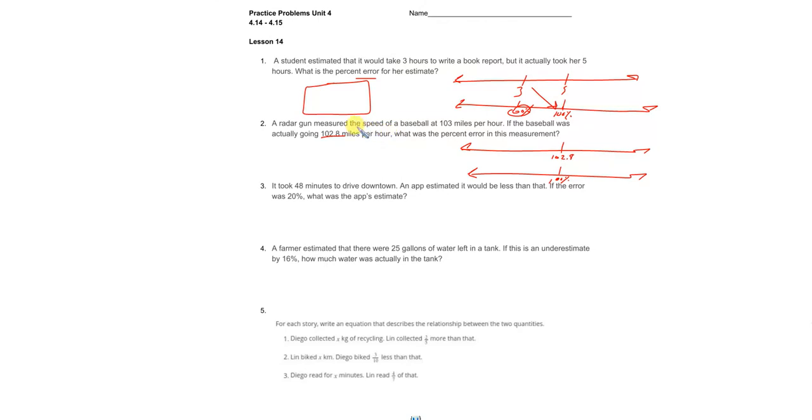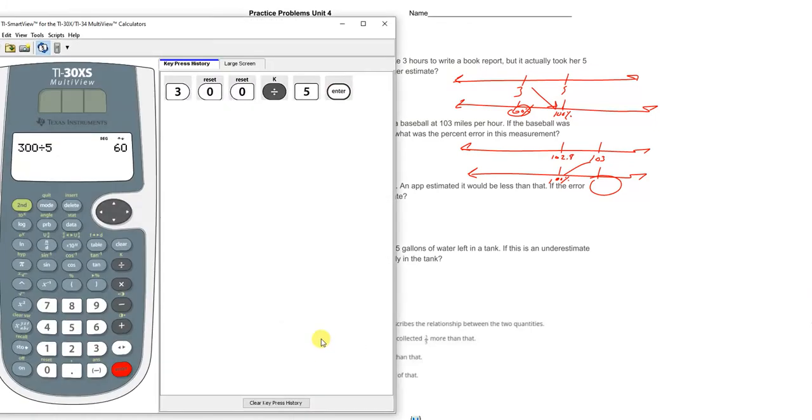The 100% mark is the actual speed, which is 102.8, and the radar gun measured it at 103. So the radar gun's off a little bit, and our job is to find out what percent that it's off. So 103 times 100, we got a cross multiply here.